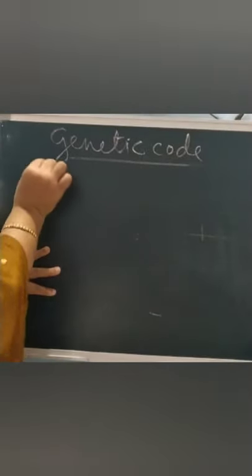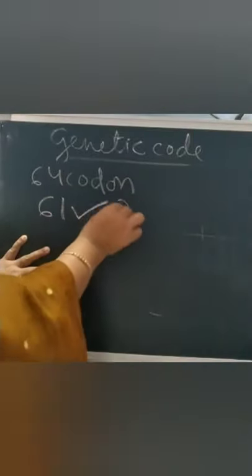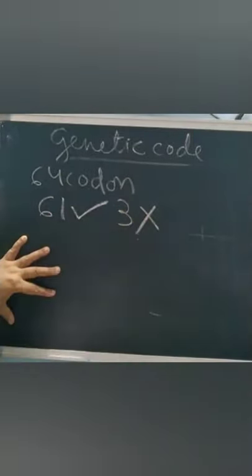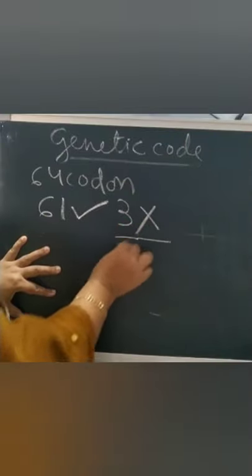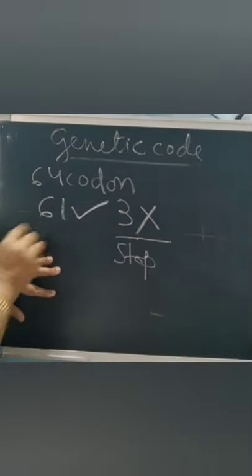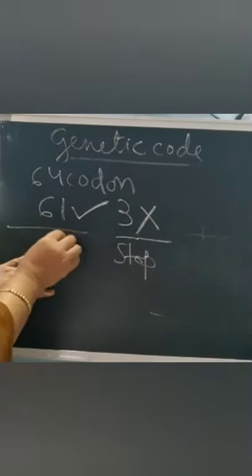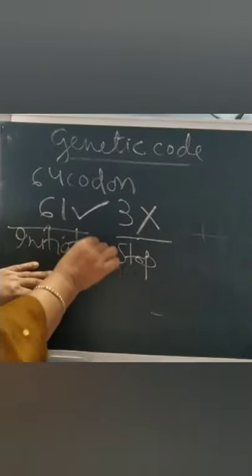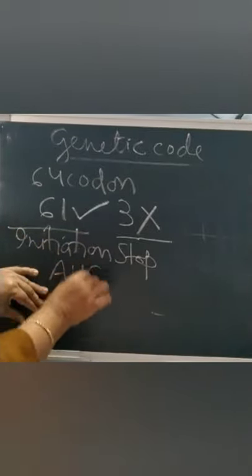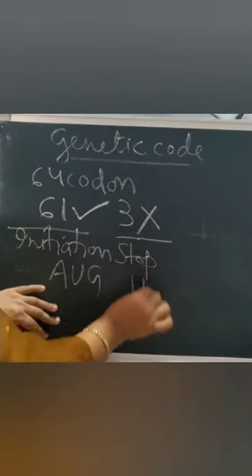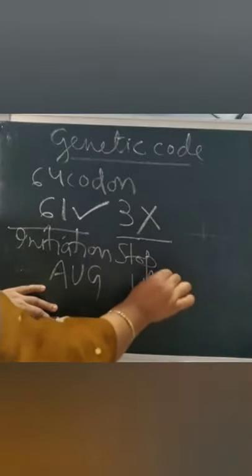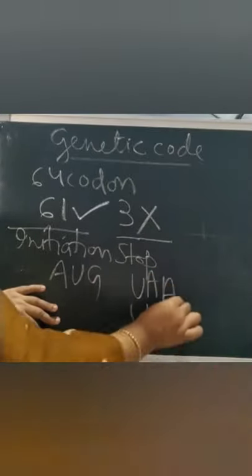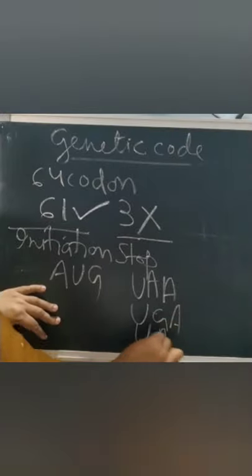The features of genetic code: there are a total of 64 codons. Out of these, 61 codons code for amino acids, but 3 do not code — these are called stop codons. The stop codons are UAA, UGA, and UAG. The initiation codon is AUG.